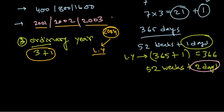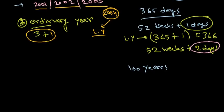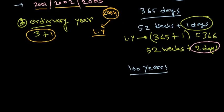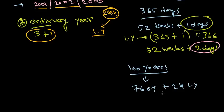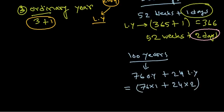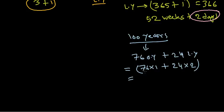Now let's say they give us 100 years — how many odd days are there? In 100 years, every 3 years there is a leap year, so there should be 76 ordinary years plus 24 leap years. In 76 ordinary years there is 1 odd day each, giving 76. In 24 leap years there are 2 odd days each, giving 48. So the total is 76 plus 48, which equals 124 odd days.